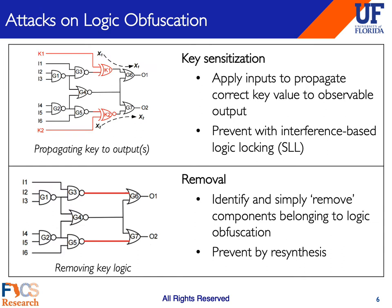Since logic locking was first introduced, numerous attacks have been proposed against it. The first few attacks included DFT or ATPG-based techniques to propagate the secret key to observable points of the circuit and thus infer the correct key. Countermeasures included careful placement of locking gates to cause interference among key gates. Removal attacks were also proposed to identify the key gates or locking logic via structural metrics, and an attacker would subsequently remove the locking gates to invalidate the obfuscation. To mitigate such attacks, logic resynthesis was proposed, which can merge the locking logic with the original design via logic optimization and thus prevent isolating the locking gates in the design netlist.